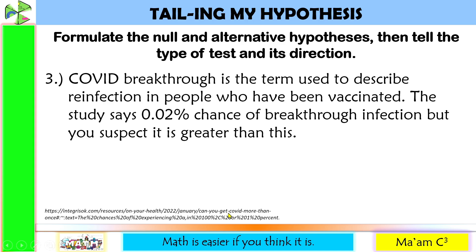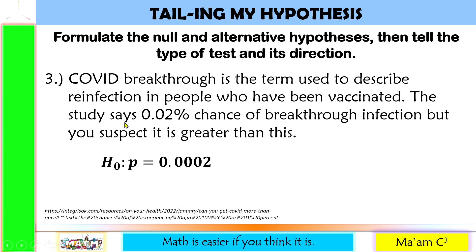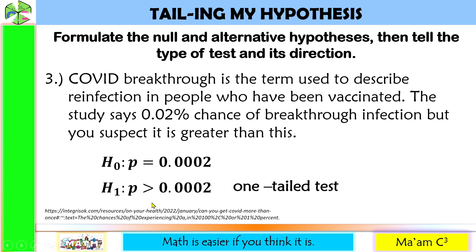COVID breakthrough is the term used to describe reinfection in people who have been vaccinated. The study says 0.02% chance of breakthrough infection, but you suspect it is greater than this. This study says 0.02% — this will be our null hypothesis: H₀, P is equal to 0.0002. Our alternative hypothesis — the keyword here is greater than — so H₁: P is greater than 0.0002. Since this is greater than, this is a one-tailed test, particularly right-tailed.